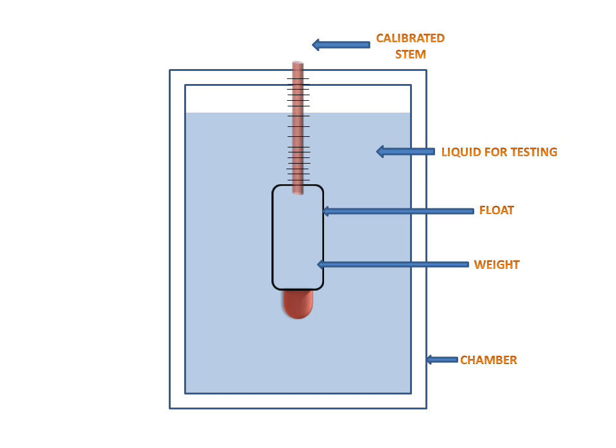If the density of the liquid changes, then what will happen? The float will go in the upward direction and the reading will change according to the rising of the float and the scale, and this reading gives us the density of the water.